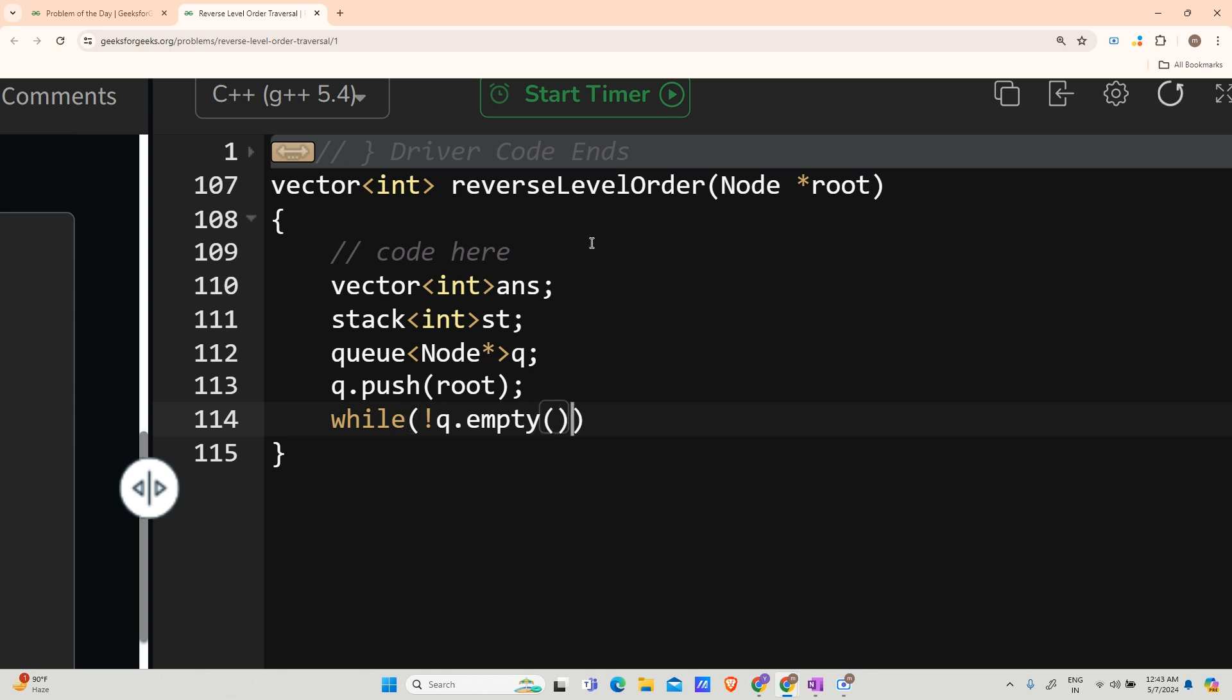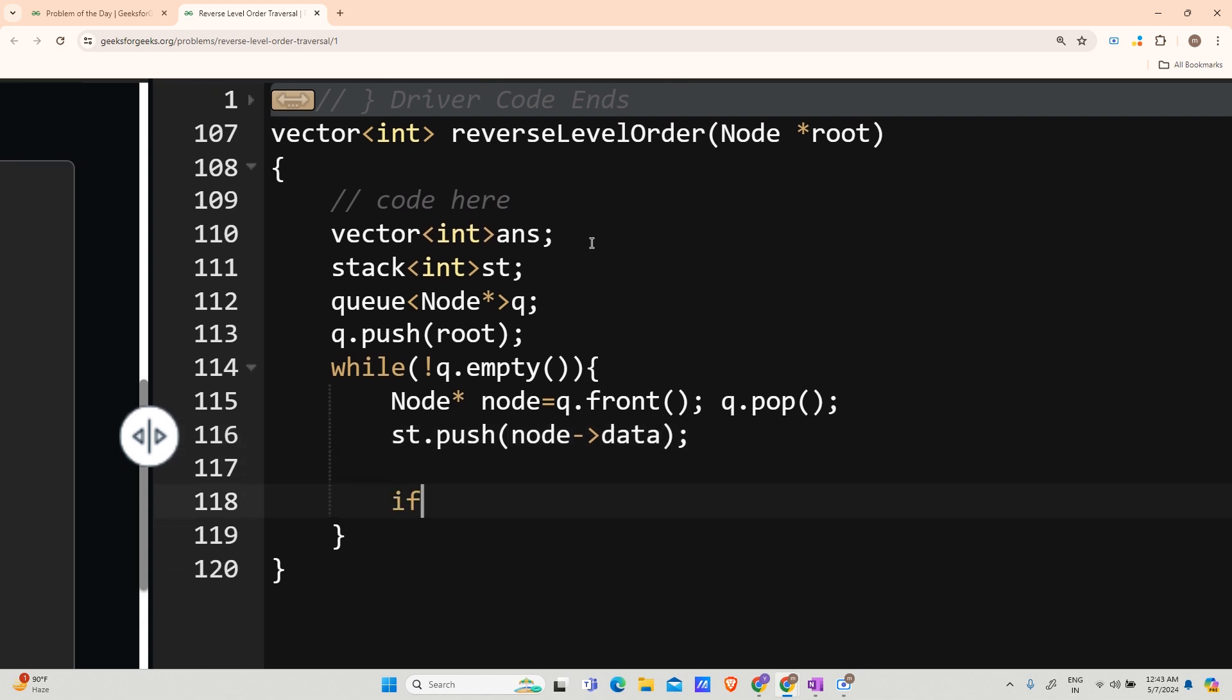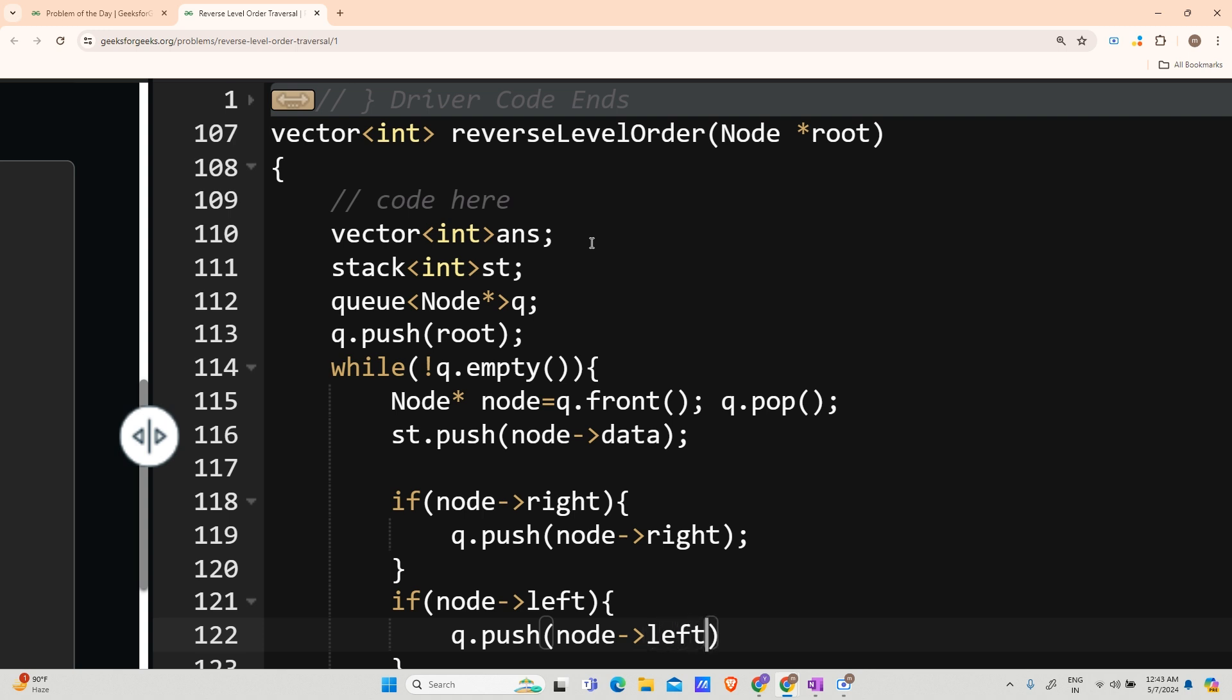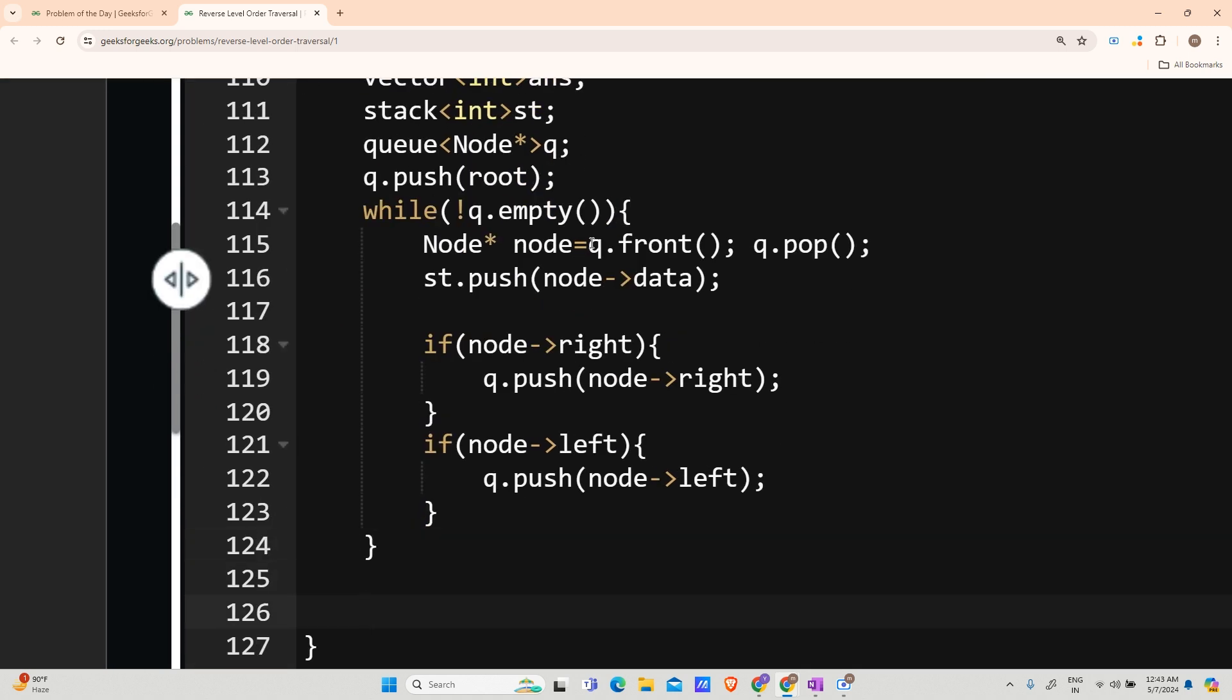In that case I will say my node becomes node star node equals to queue dot front. And I will pop the element out of the queue, queue dot pop. Now stack dot push node's data. And now explore the right and left. That is if right is present, that is node's right is not null, in that case queue dot push node's right. And similarly if node's left is not null, in that case queue dot push node's left.